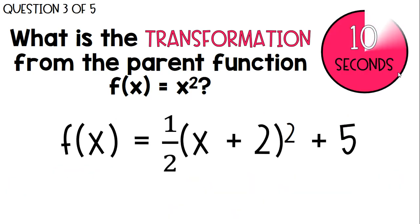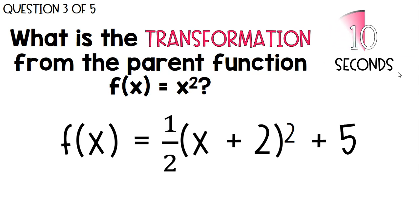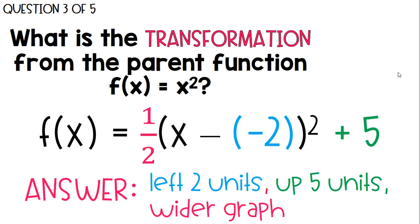Next one. What would this transformation look like? x plus 2 really means it's x minus a negative 2, so that would mean left 2 units, the plus 5 means up 5 units, and the 1 half would make a wider graph.